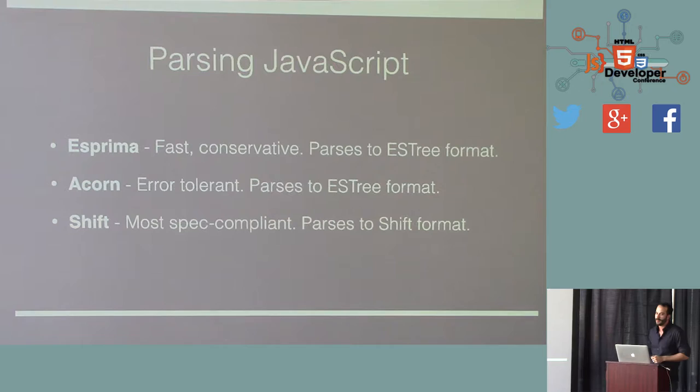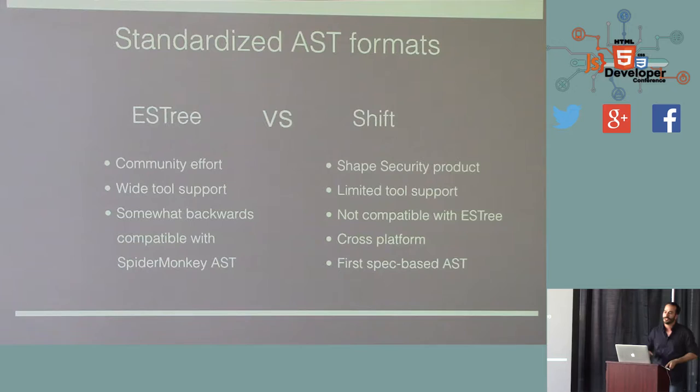So Esprima and Acorn parse to ES tree format. There's also the shift parser, which is the most spec compliant, which is less important for probably people like you who know your own code, probably writing reasonable code. You're not doing anything crazy to it, but it's a good alternative for tools that might need to operate on any JavaScript because then you have to account for as much possible JavaScript as can technically run.